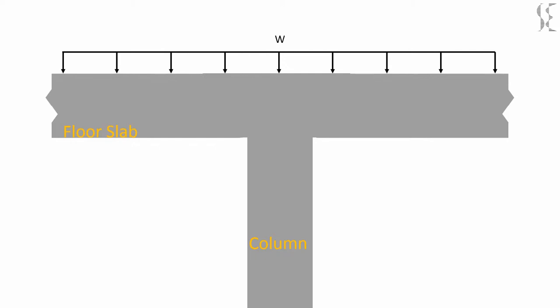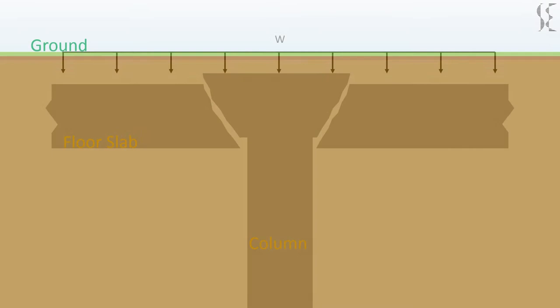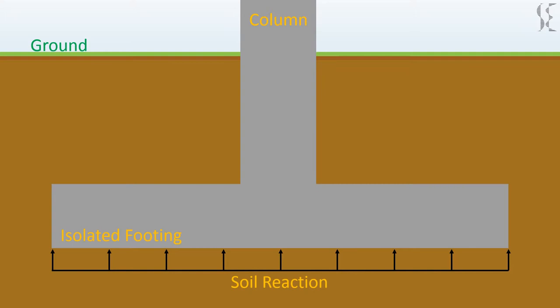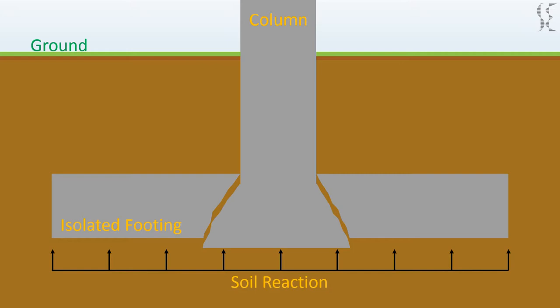Similar thing will happen in an isolated footing resisting the soil reactions from the bottom if it is inadequate to resist the shear forces. These two examples of failure modes in slab and footing are called two-way punching shear failures.